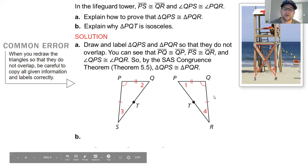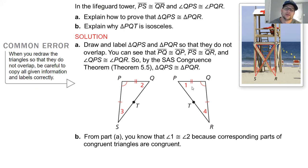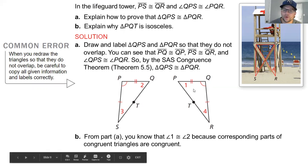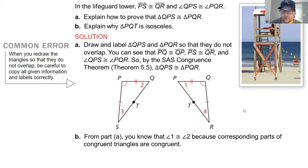Part B, explain why it's isosceles. So based on part A, we know that angle 1 is congruent to angle 2 because the corresponding parts of congruent triangles are congruent. You've proved the whole triangle so you can say that since 1 and 2 are your corresponding parts, the ones that match up, those are congruent to each other, and 3 and 4 are corresponding, those match up, they're congruent to each other.